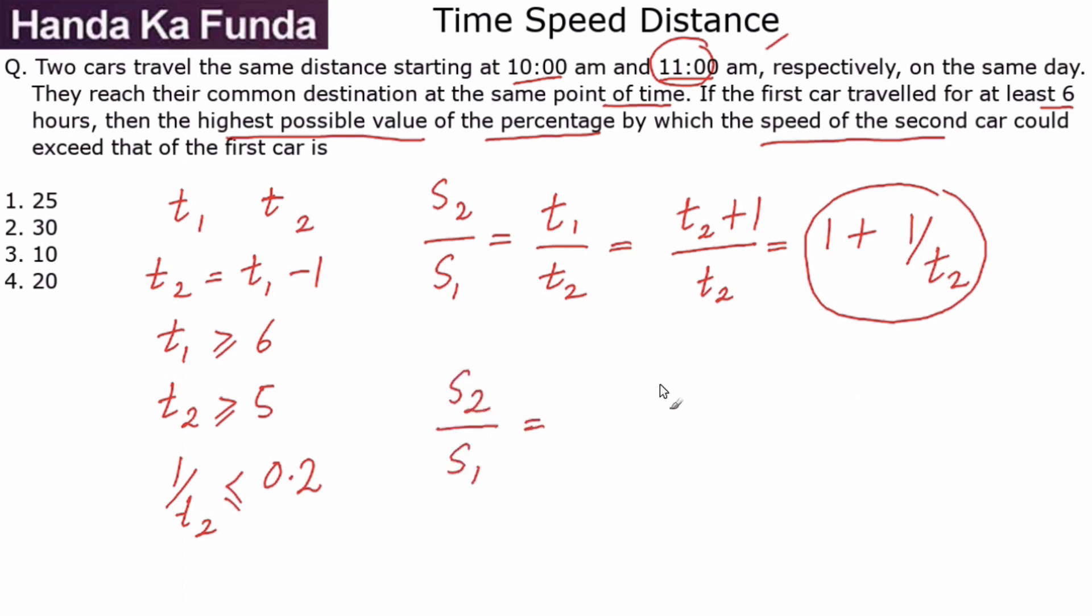Which means s₂ by s₁, which is 1 plus 1 by t₂, will be less than or equal to 1 plus 0.2. What I have done here is that this 1 by t₂ I have replaced it with 0.2, which essentially means that s₂ by s₁ is less than or equal to 1.2.